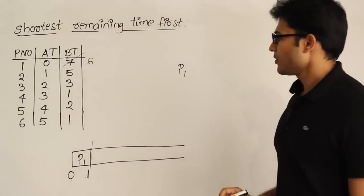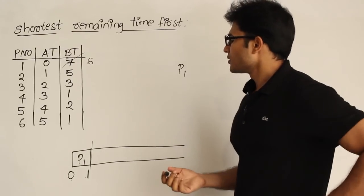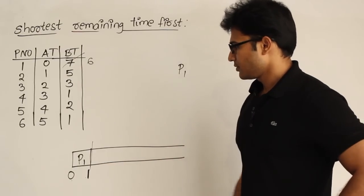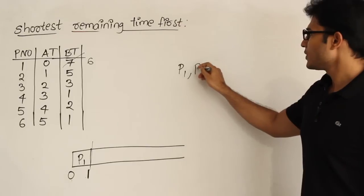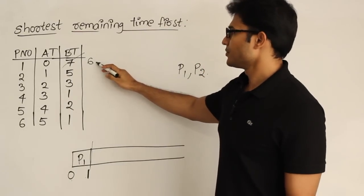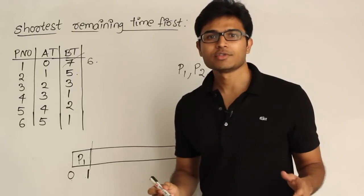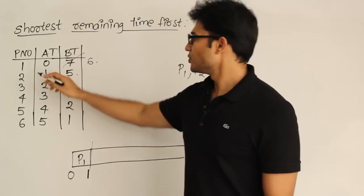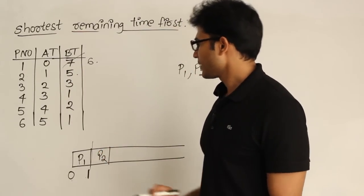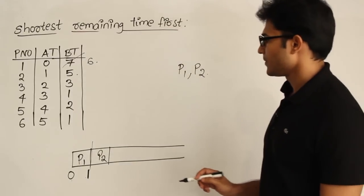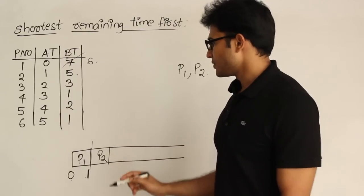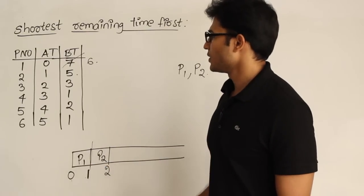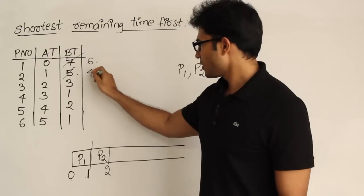Now I check if any process is available by time 1. By time 1, P2 has arrived, so I now have P1 and P2 both available. P1 has a remaining time of 6 and P2 has a remaining time of 5. Based on the shortest burst time criterion, I choose P2. For P2, the burst time is 5, but I don't run it to completion — I run it for 1 unit, then stop and check. After running P2 for 1 unit, its remaining time becomes 4, and the time is now 2.